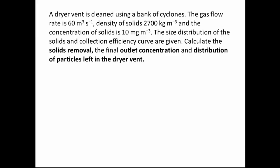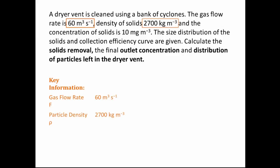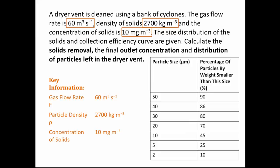To make things simpler we pick out the key information. We know that the gas flow rate is 60 m³ per second, the density of the solids is 2700 kg per m³, and the concentration of the solids is 10 mg per m³. We also have the table with the particle sizes and their distribution. The collection efficiency curve is on another slide.